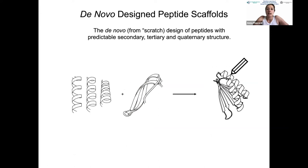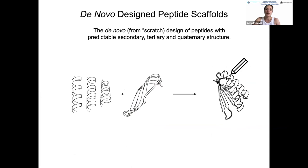Another approach is de novo design—designing a peptide or protein from first principles, coming up with a sequence that predictably gives a well-defined secondary, tertiary, and potentially quaternary structure. You can design alpha helical segments, beta sheets, or entirely new protein structures. Top7 is an example of the first truly artificial protein designed de novo—a structure not found anywhere in biology.